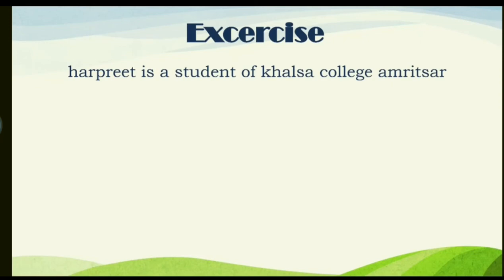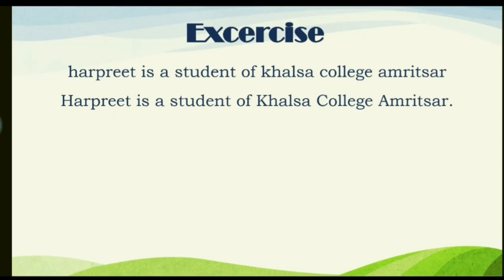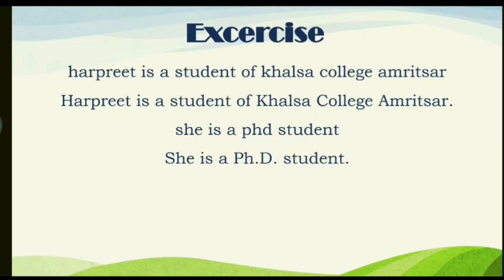More exercises. 'Harpreet is a student of Khalsa College Amritsar.' Punctuated: 'Harpreet is a student of Khalsa College, Amritsar.' — capital H, K for Khalsa, C for College, A for Amritsar, all capital as they are proper nouns. 'She is a PhD student.' Punctuated: 'She is a Ph.D. student.' — PhD is an abbreviation written as capital P, small h, dot, capital D, dot.